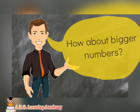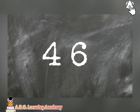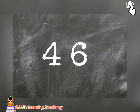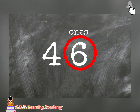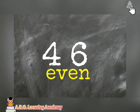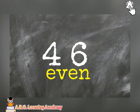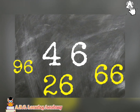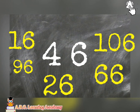But how about bigger numbers? For example, we have here 46. The first thing to do with this number is look at your ones. Your ones here is number six. We studied that number six is an even number. Therefore, 46 is an even number. Any number that ends with six, like 96, 26, 66, 16, and even 106, they are all even numbers.